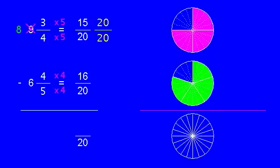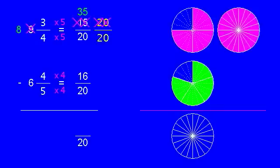So in this case, we need twentieths. So the whole becomes 20 twentieths, and that gives us a total of 35 twentieths. So now we have enough to give away.